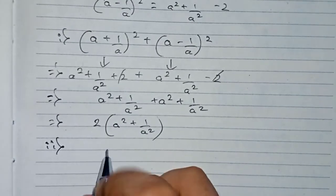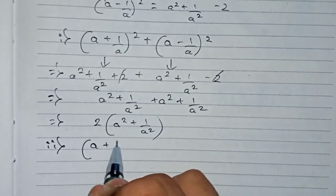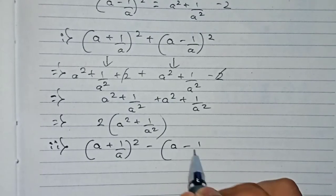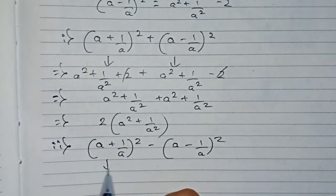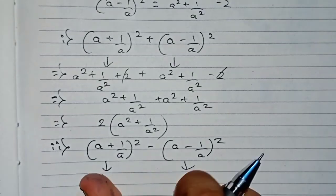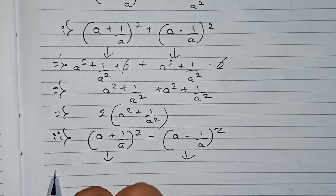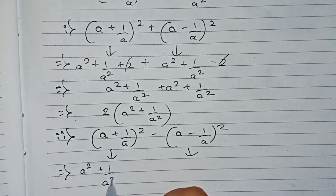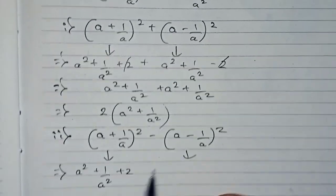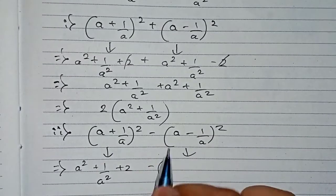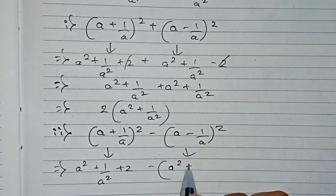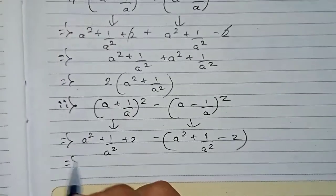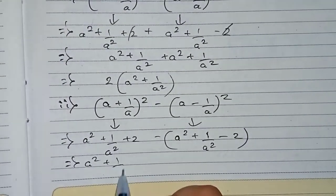Now I move to question number two, which says (a + 1/a)² − (a − 1/a)². For this we use the identities: (a + 1/a)² = a² + 1/a² + 2, and then minus, giving a bracket with (a² + 1/a² − 2). Opening the bracket gives a² + 1/a² + 2 − (a² + 1/a² − 2).